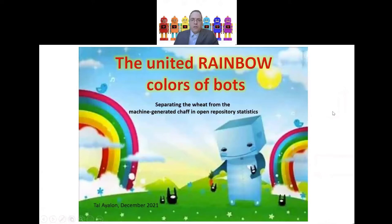Today I'd like to discuss something that has occupied a lot of our time as administrators of open institutional repositories and other open repositories or repositories of open access. It has to do with accuracy in reporting of usage statistics and how we can make sure that we have as accurate results as we can. The presentation is titled: 'The United Rainbow Colors of Bots — Separating the Wheat from the Machine-Generated Chaff in Open Repository Statistics.'